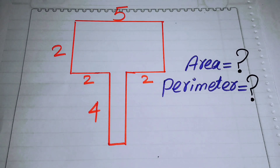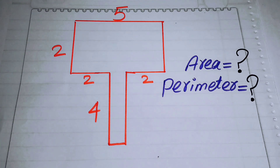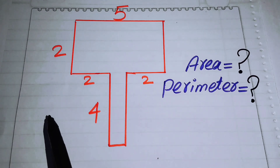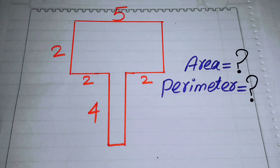Hello everyone, welcome back to the Map of Mathematics. In this video we are going to solve a nice math olympiad geometric challenge. We have a diagram where certain side lengths are given, and our goal is to find the area and perimeter of this shape.